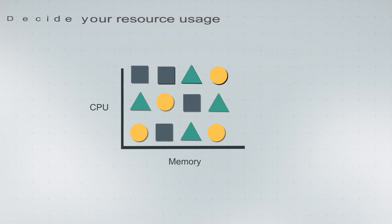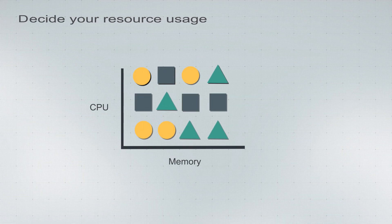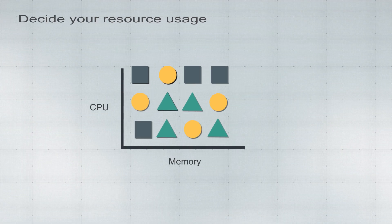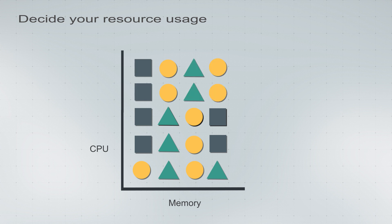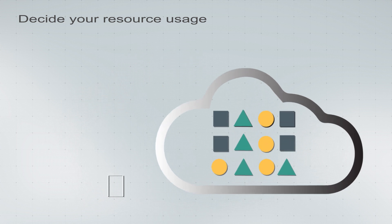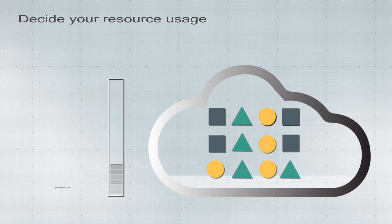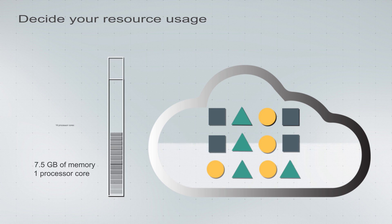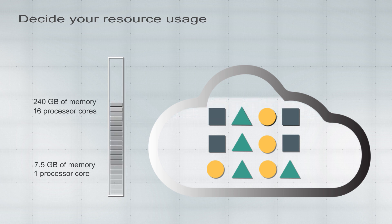You can play with various resource combinations, start small and scale up when needed. Create virtual machines with as little as 7.5 gigabytes of memory and just one processor core, or ramp up to 16 Intel Xeon processor cores and up to 240 gigabytes of memory per VM.